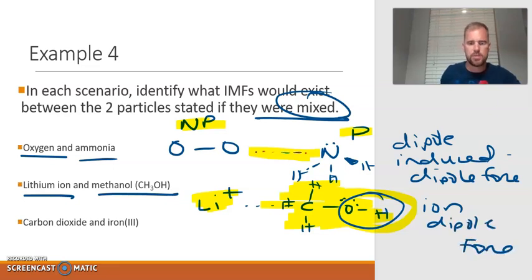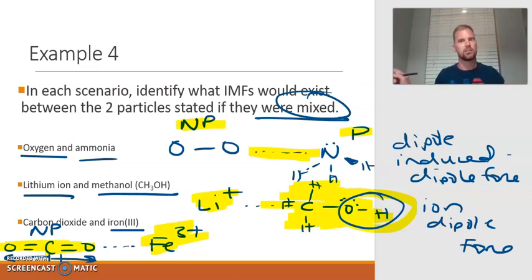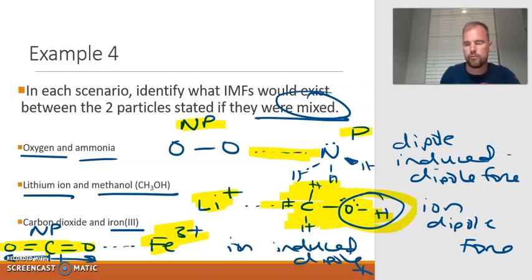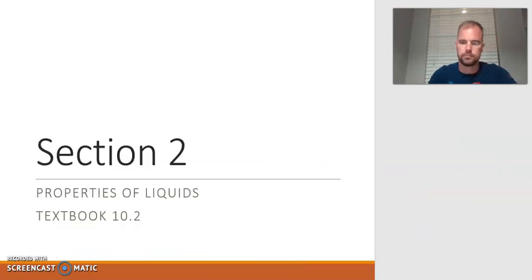Finally, the last one: carbon dioxide, CO2, and iron(III). Remember that Roman numeral III means that's its charge - you have an ion. It's attracting to carbon dioxide, which is a nonpolar molecule. Yes, it has polar bonds, but the polarities cancel because it's linear. So this one would be an ion-induced dipole force. Alright, we'll see you in the next video for section 2.